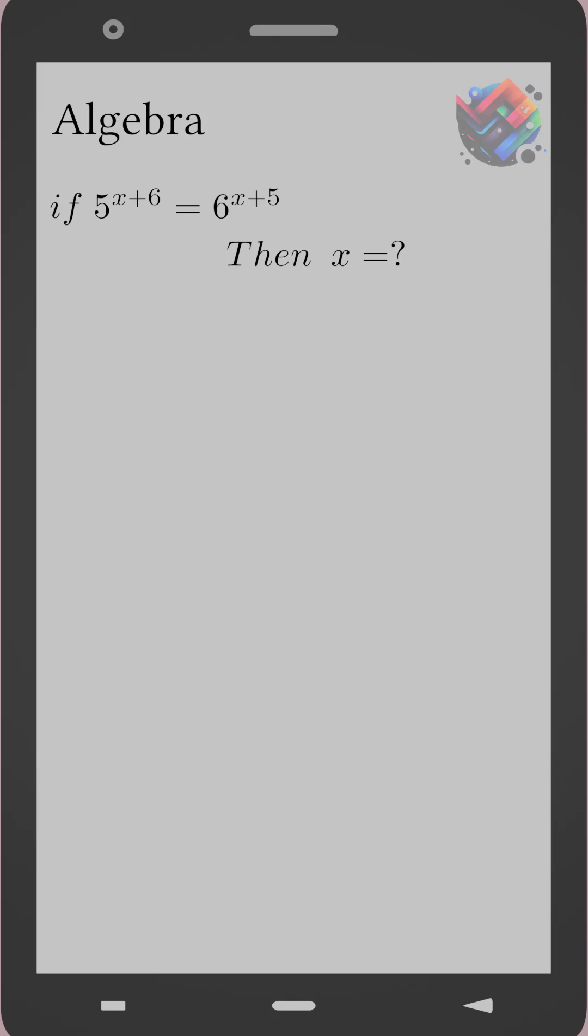We are given the equation 5 to the power open parentheses x plus 6 close parentheses equals 6 to the power open parentheses x plus 5 close parentheses. We are asked to find the value of x.